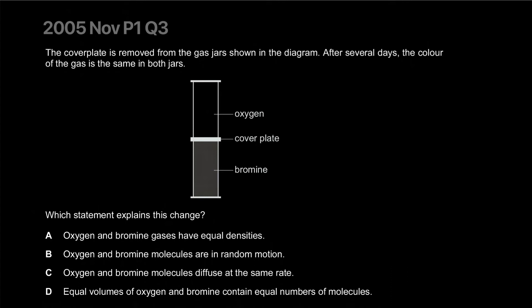Air has carbon dioxide, has oxygen, has nitrogen, argon, right? Different MRs, so hence different densities, but they still all mix together. Oxygen and bromine molecules are in random motion. That explains it. That's literally diffusion. Why am I writing D? I guess D for diffusion. Nah, that's the answer. Oxygen and bromine molecules diffuse at the same rate. Rate is probably not true. The heavier gas diffuses slower than the lighter gas. Equal volumes of oxygen and bromine contain equal number of molecules. That's true, but doesn't explain it. Right? So the correct answer is B.